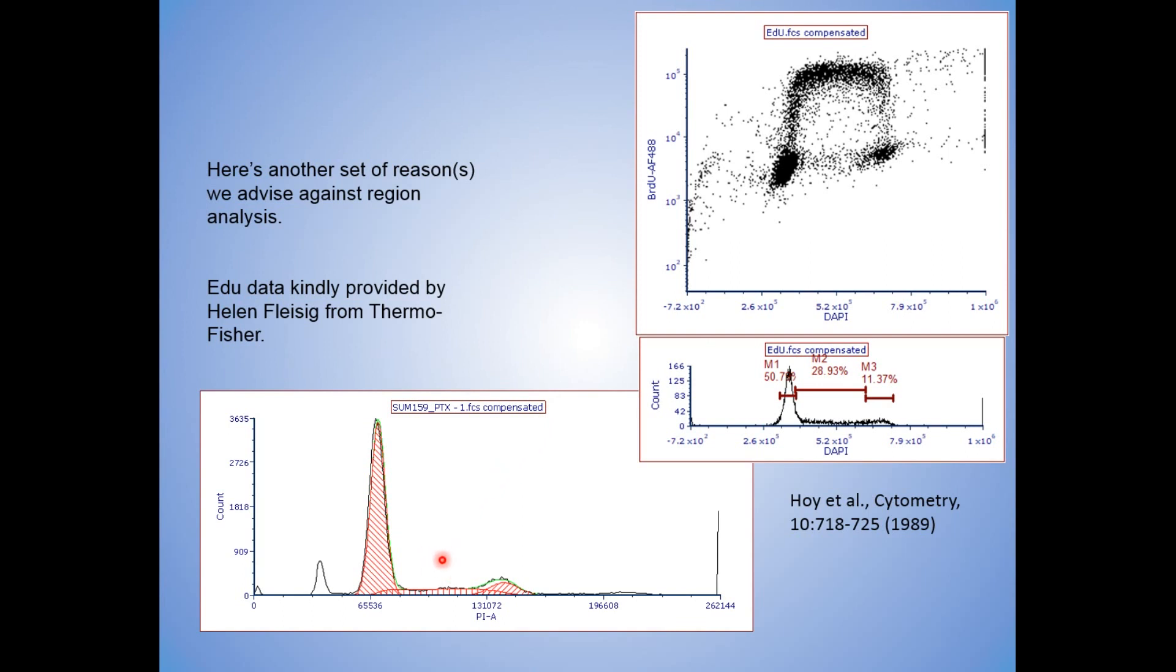Let the cell cycle modeling software do it. In fact, the one file here, again, that's SUM 159. You see the spill in here? Follow the red dot. That spill in here. This is S. There are guys here in S that are still going to be counted in G1, G0. That's these guys.